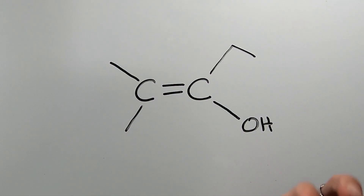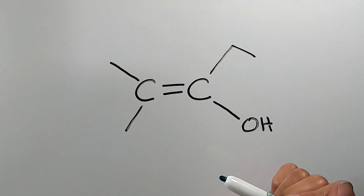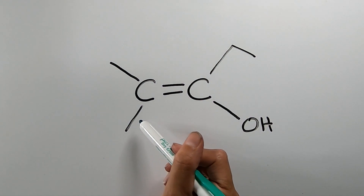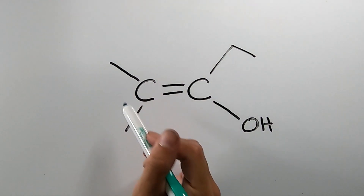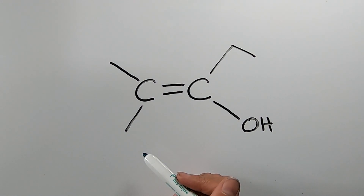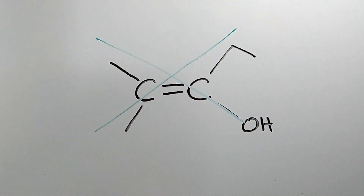Consider this example: we have another double-bonded carbon. However, there are two methyl groups attached to the same carbon, which means this is not a cis, trans, or EZ isomer at all. Be careful not to misclassify these.